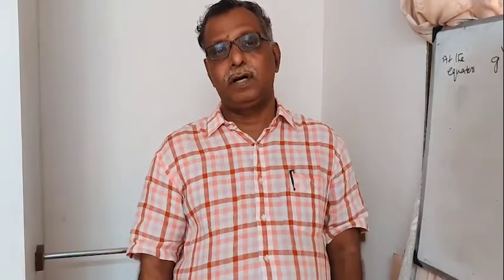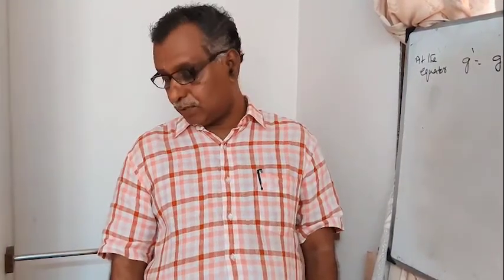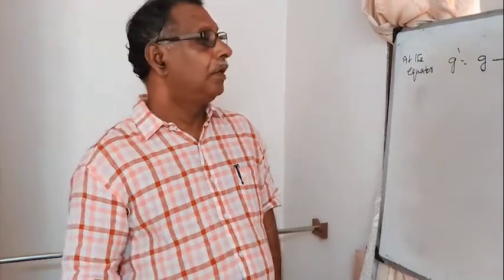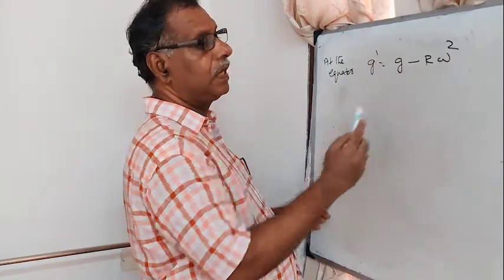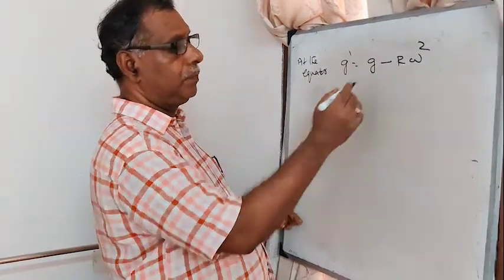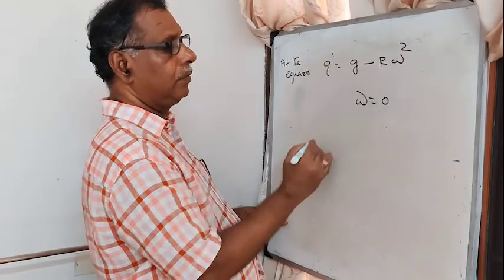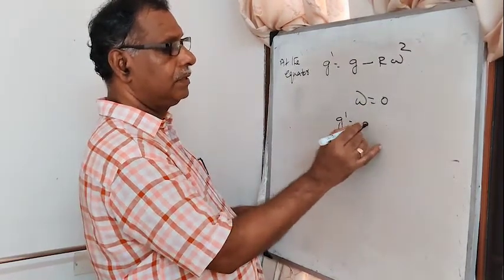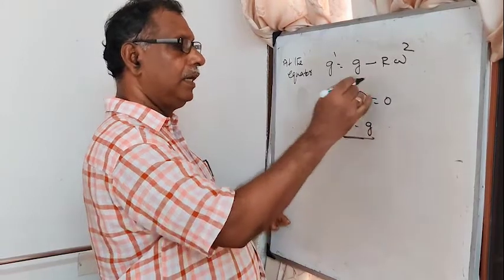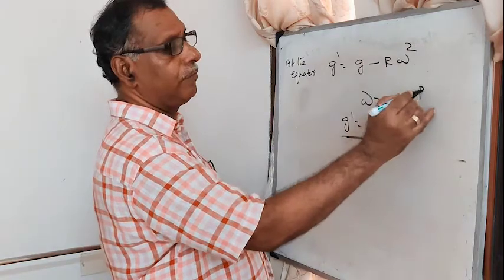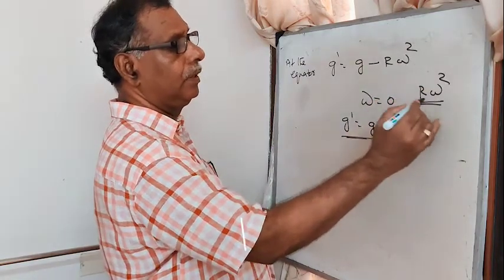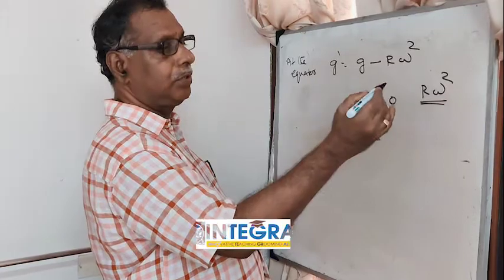Suppose the earth stops rotating — ω = 0. At the equator, g' = g − R·ω² becomes g' = g. That means when the earth stops rotating, acceleration due to gravity at the equator increases by a factor of R·ω².